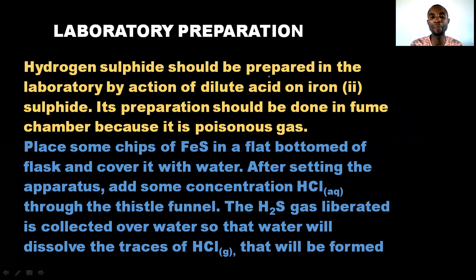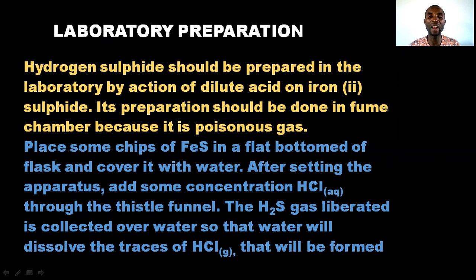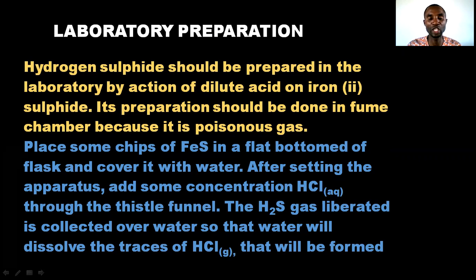Hydrogen sulfide can be prepared in the laboratory by the action of dilute acid on iron(II) sulfide. The preparation should be done in the fume chamber or fume cupboard because it is a poisonous gas. Place some chips of iron(II) sulfide in a flat-bottom flask and cover it with water. After setting up the apparatus, add concentrated HCl through the thistle funnel. The hydrogen sulfide gas liberated is collected over water so that the water dissolves the trace of hydrogen chloride formed.